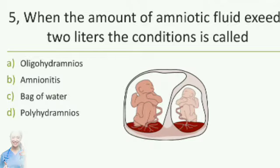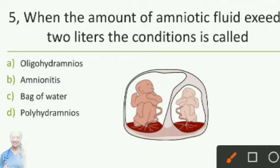When the amount of amniotic fluid exceeds 2 liters, the condition is called: option A oligohydramnios, option B amniotic acid, option C bag of water, option D polyhydramnios. The answer is option D, polyhydramnios.